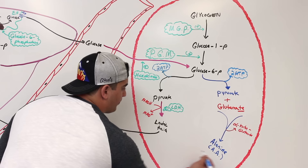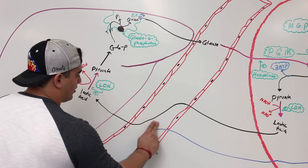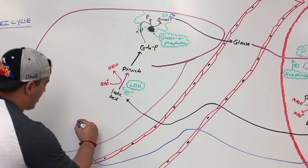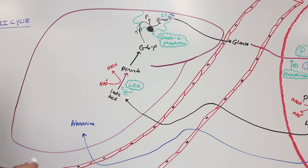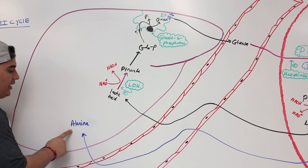The alanine travels through the blood and into the liver. So we bring this alanine into the liver.